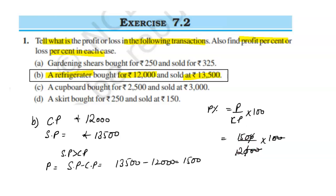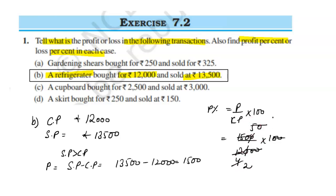Cancelling zeros and simplifying: 1500 divided by 12,000 into 100 simplifies to 25 upon 2, which gives us 12.5 percent.